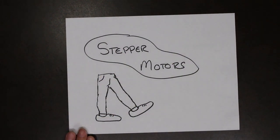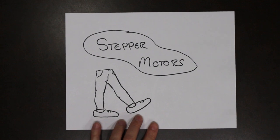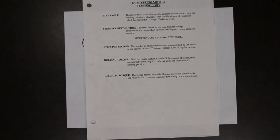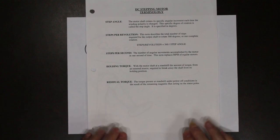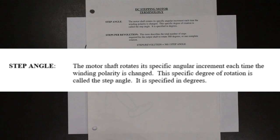Before we get into how a stepper motor works, there are five definitions that you're responsible for knowing. This sheet is in your class notes and it is entitled DC Stepping Motor Terminology. The first one is what's referred to as the step angle. The motor shaft rotates a specific angular increment each time the winding polarity is changed, and this specific degree of rotation is called the step angle.